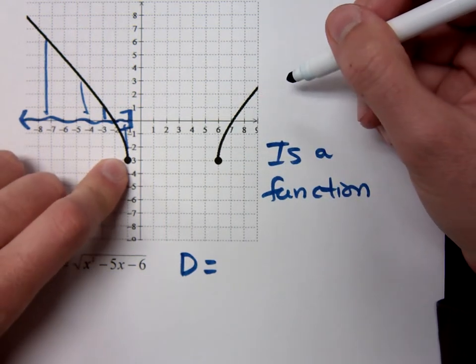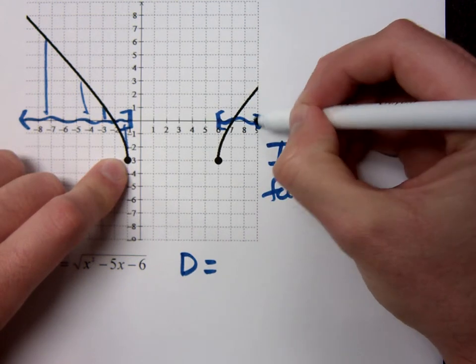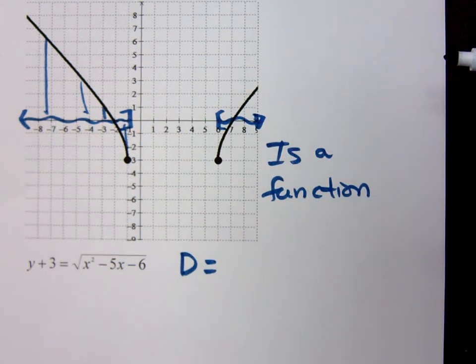What are the x-values that make up the right side piece? From 6 to positive infinity. Do you all agree with what I have there? Then how do I describe that using interval notation?